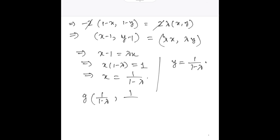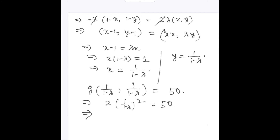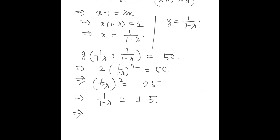Substituting into the constraint g(1/(1-lambda), 1/(1-lambda)) = 50, we get 2 times [1/(1-lambda)]² = 50, so [1/(1-lambda)]² = 25, giving 1/(1-lambda) = plus or minus 5. Therefore the critical points are (x, y) = (5, 5) and (-5, -5).